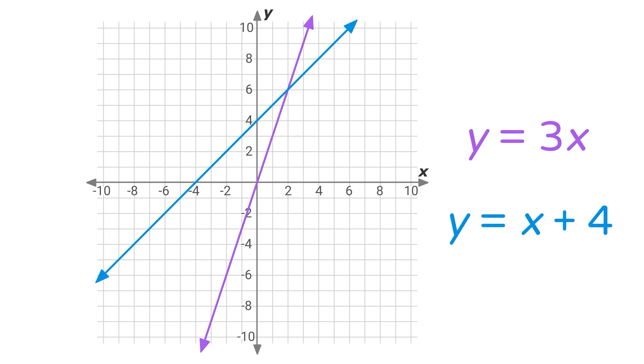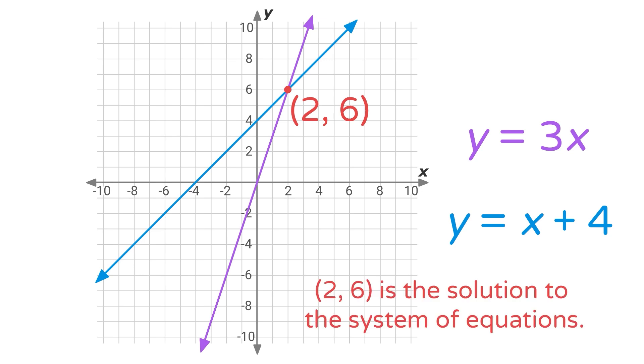Remember, in order to be a solution to a system of equations, a point has to be a solution to every equation. Let's add the graph of the line y equals x plus 4. Every point on this line is a solution to y equals x plus 4. But there is one point on both lines: (2, 6). This is the point where the lines intersect — the only point that is a solution to both equations. So (2, 6) is the solution to the system of equations y equals 3x and y equals x plus 4. To solve a system of equations by graphing, all we have to do is find where the graphs intersect.